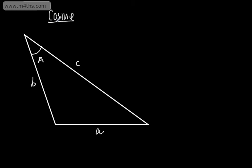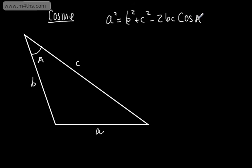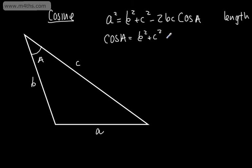We discussed in the first video that the cosine rule would be used if we had an enclosed angle. For example, this angle here is enclosed between the sides B and C. We can say that A squared is equal to B squared plus C squared minus 2BC cos A. This is the cosine rule, and this is what's given in the formula book.